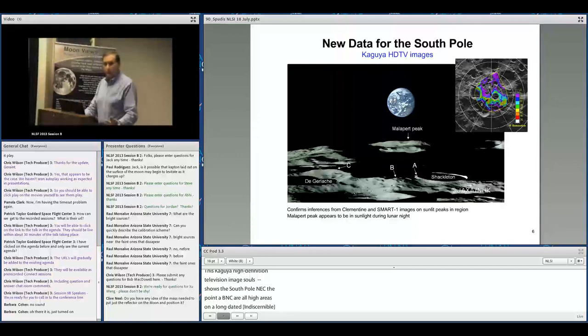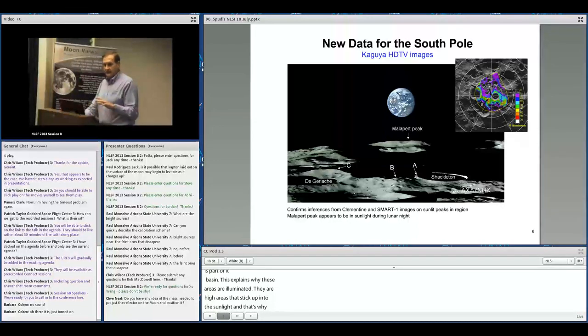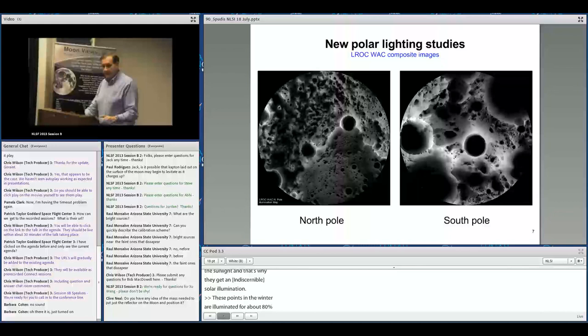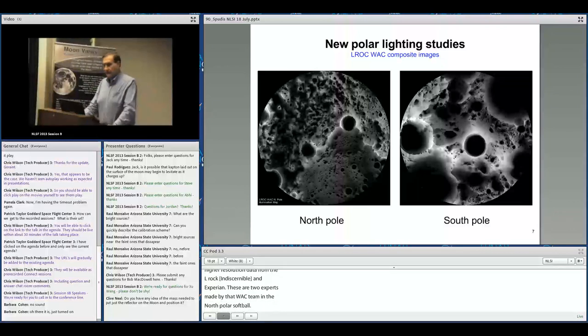Now we have much higher resolution data from LROC. These WAC images show lighting conditions at both poles—bright areas are in high degrees of sunlight, dark areas in permanent darkness. They're heterogeneously distributed, but both poles have areas of high solar illumination in proximity to permanent darkness, a very favorable and fortuitous condition.